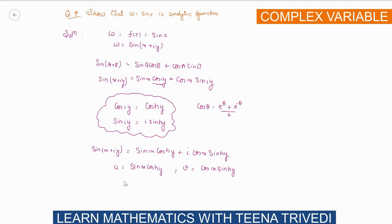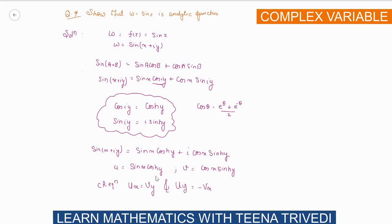Now we have to prove that w = sin(z) satisfies the Cauchy-Riemann (CR) equations, because the CR equations are a necessary condition for a function to be analytic. The CR equations are: ∂u/∂x = ∂v/∂y, and ∂u/∂y = −∂v/∂x.